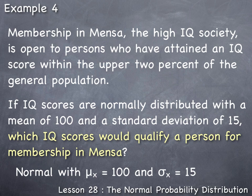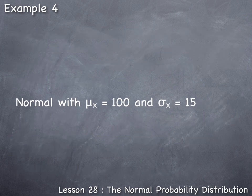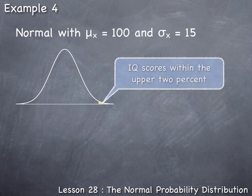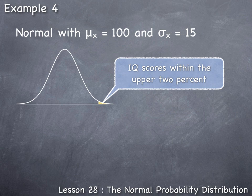IQ scores within the upper 2% of the general population would qualify a person for membership in Mensa. In this normal bell-shaped distribution, only this upper 2% of IQ scores would be allowed. We need to find the IQ score such that only 2% of all other IQ scores are greater than it.